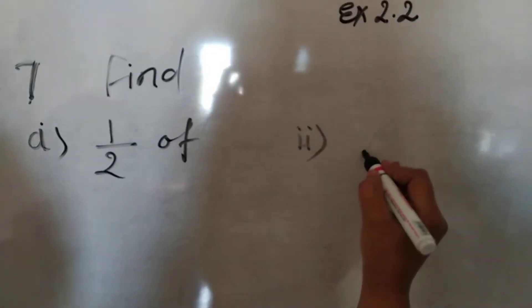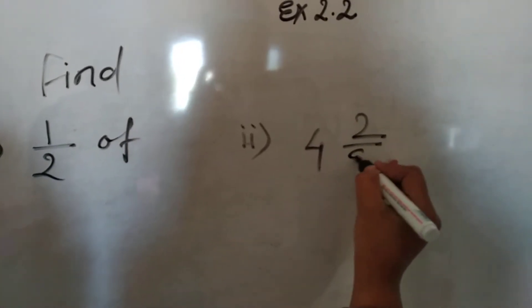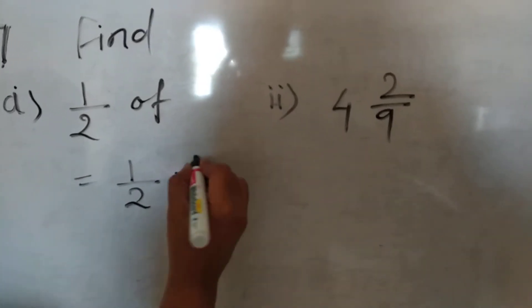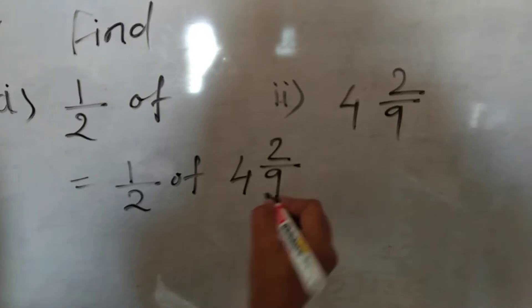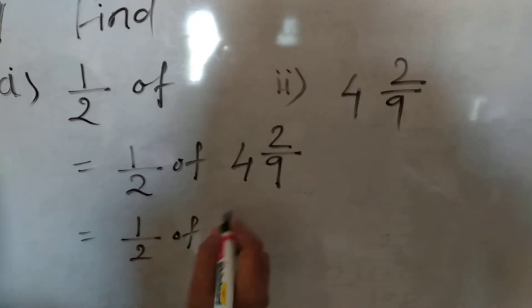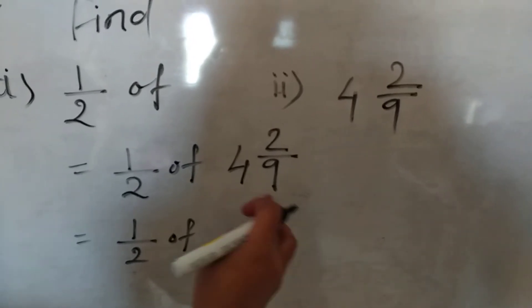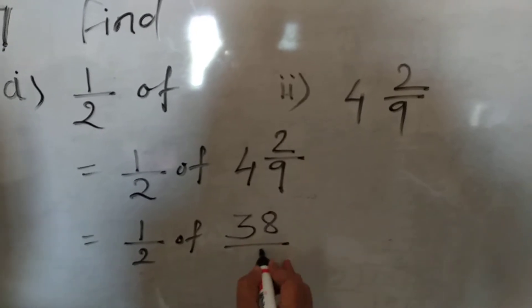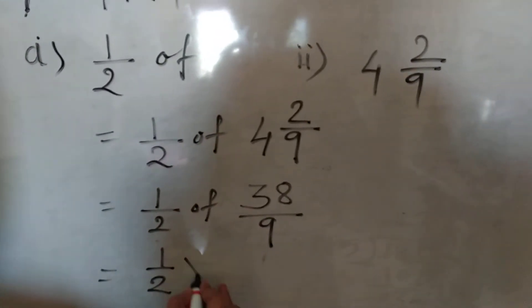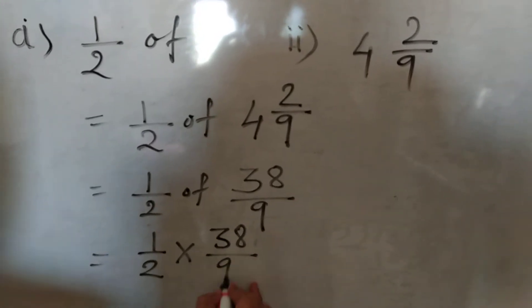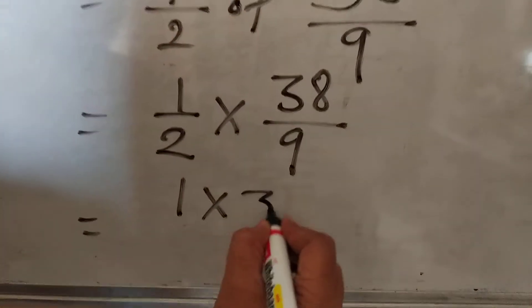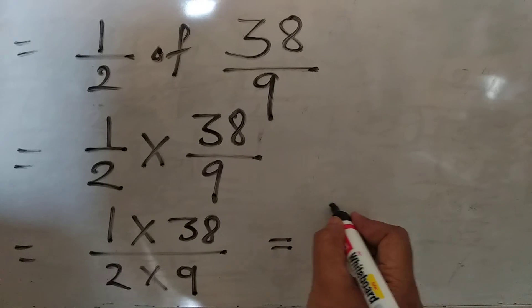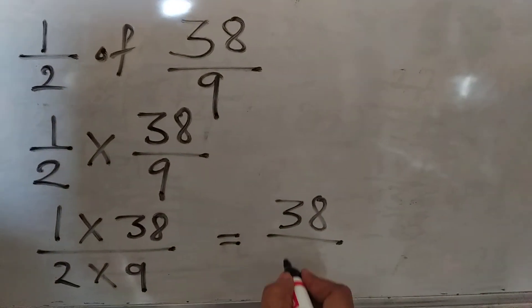The second one is 1/2 of 4 and 2/9. We will write 1/2 of 4 and 2/9. Convert this mixed number into an improper fraction: 9 fours are 36, 36 plus 2 is 38, giving 38 upon 9. So 1/2 multiplied by 38 upon 9 equals 1 multiplied by 38 upon 2 multiplied by 9, which is 38 upon 18.